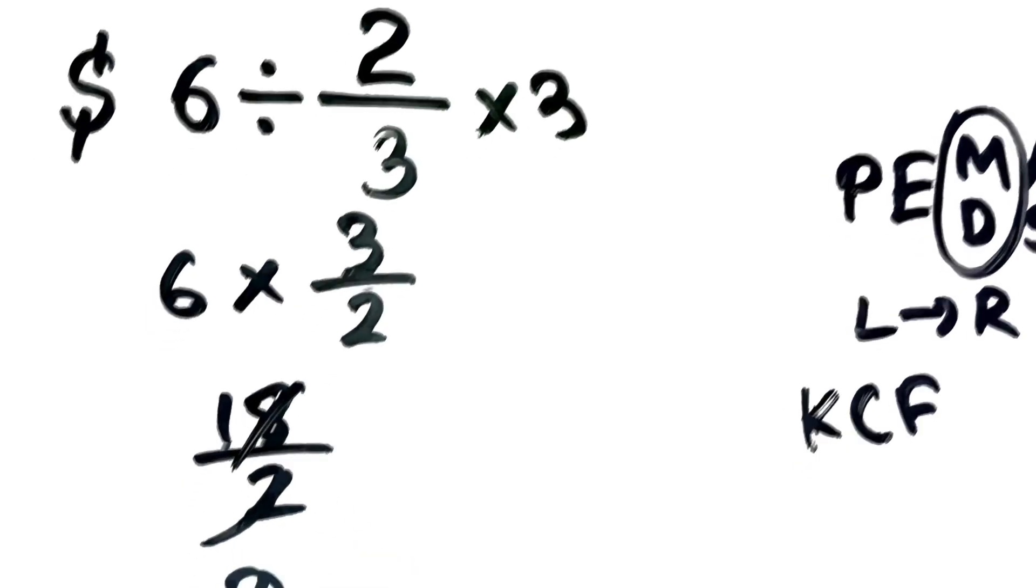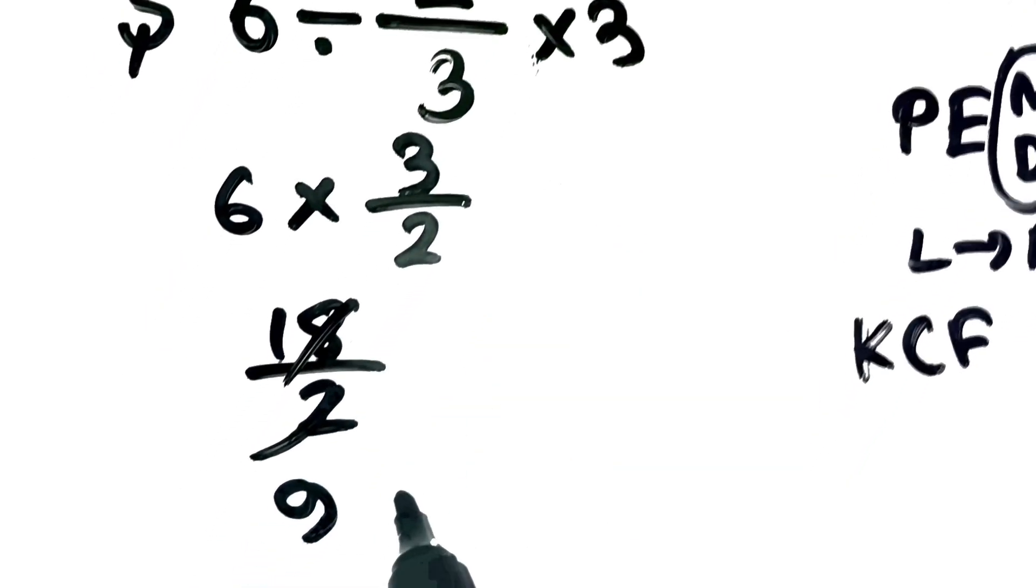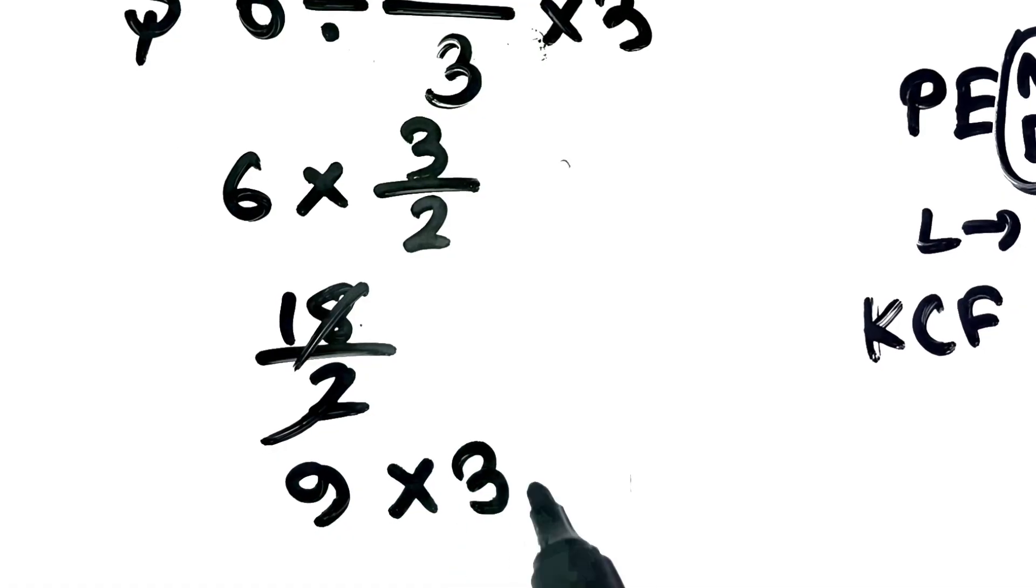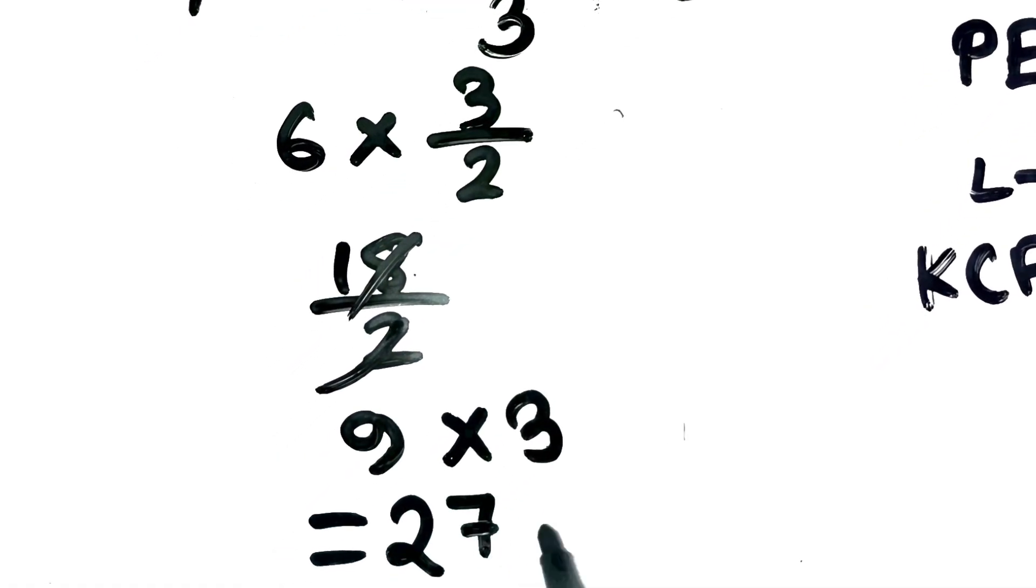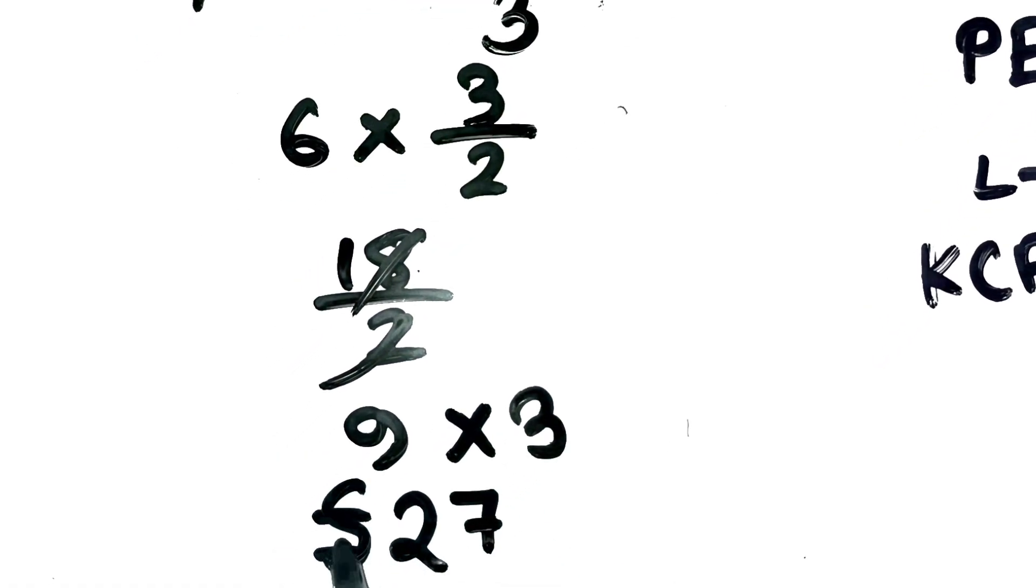So far, we've got 9 times 3 still left. Multiply that, and we get 27. So, the correct answer is $27, not $3.